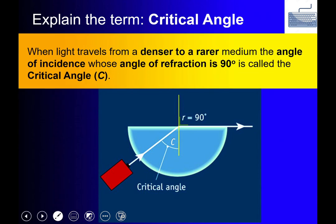When light is traveling from a more dense to a less dense medium, the angle of incidence whose corresponding angle of refraction is 90 degrees is called the critical angle. So the critical angle is the specific angle of incidence at which the refracted ray travels along the surface at 90 degrees to the normal.